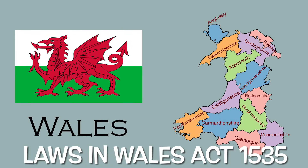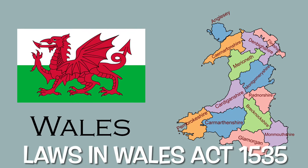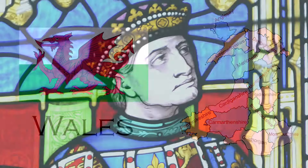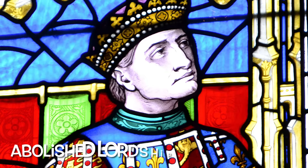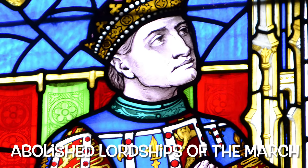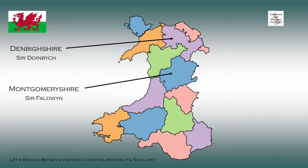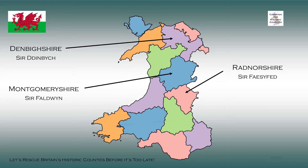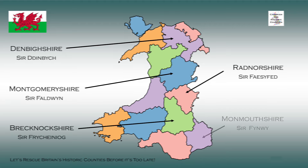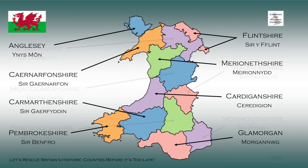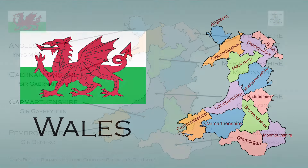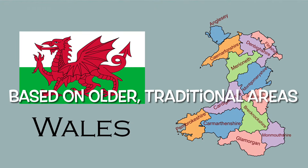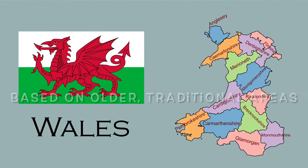The present-day pattern of the historic counties of Wales was established by the Laws in Wales Act 1535. This act abolished the powers of the Lordships of the March and established the counties of Denbighshire, Montgomeryshire, Radnorshire, Breconockshire and Monmouthshire from the areas of the former Lordships. The other eight counties had, by then, already been in existence since at least the 13th century. The historic counties are, however, based on much older traditional areas.